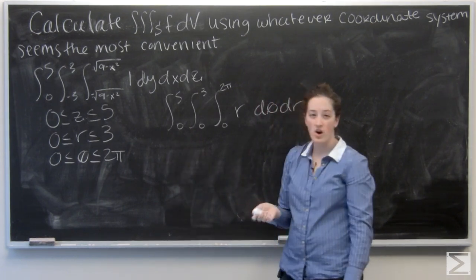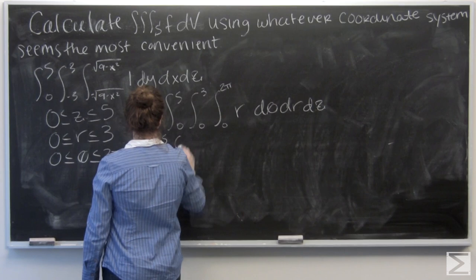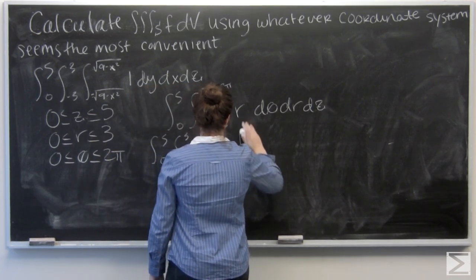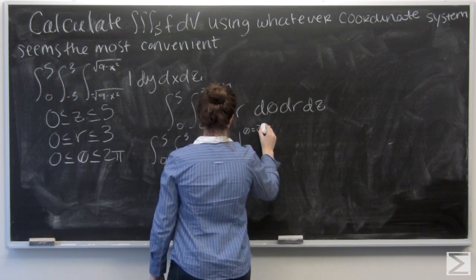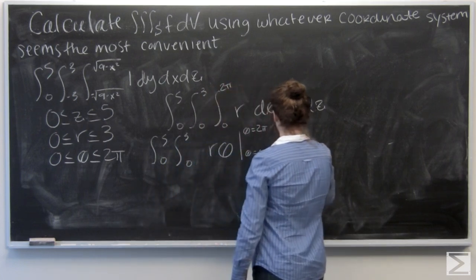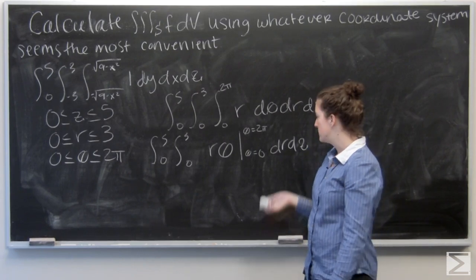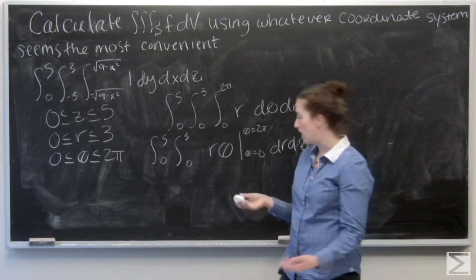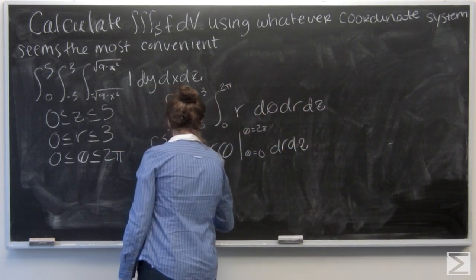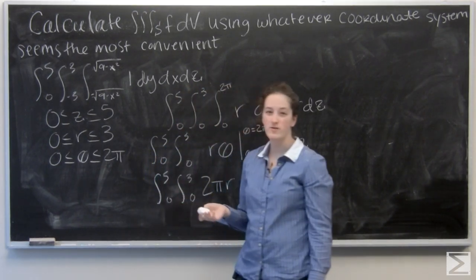So I'm integrating r with respect to theta. That's just going to give me r theta. And I'm going to evaluate that from theta equals zero to theta equals two pi. So when I plug in two pi, I'm going to get two pi r. And when I plug in zero for theta, I'm just going to get zero.